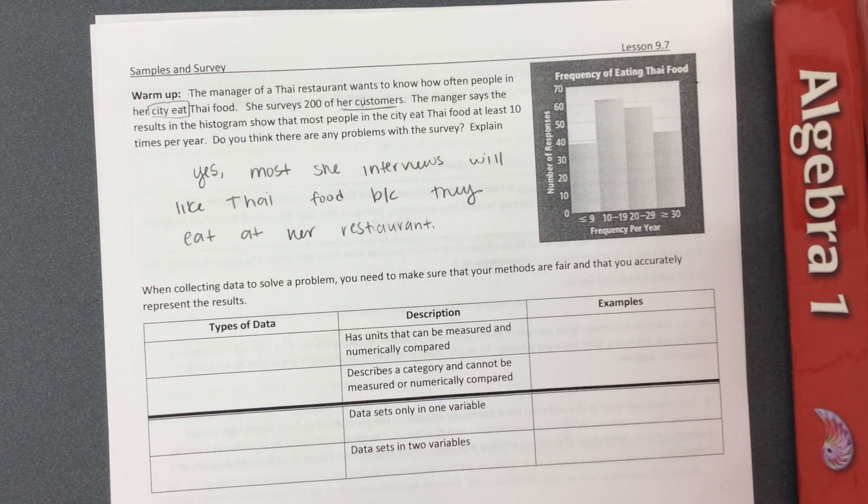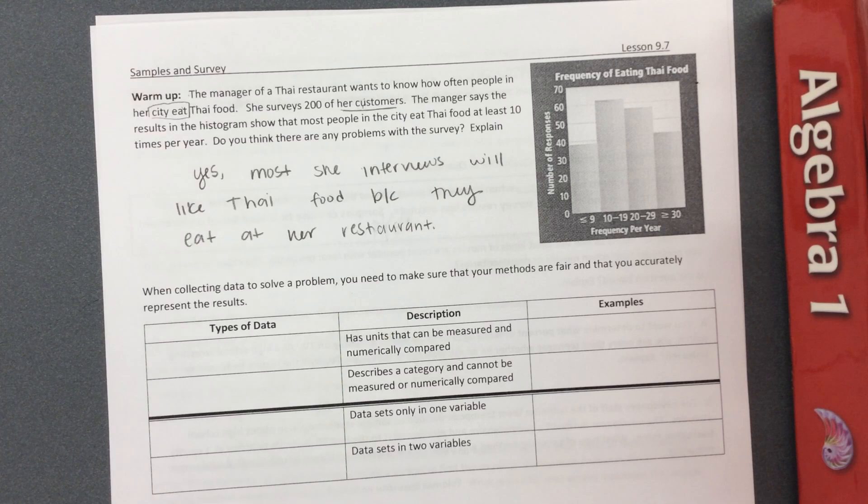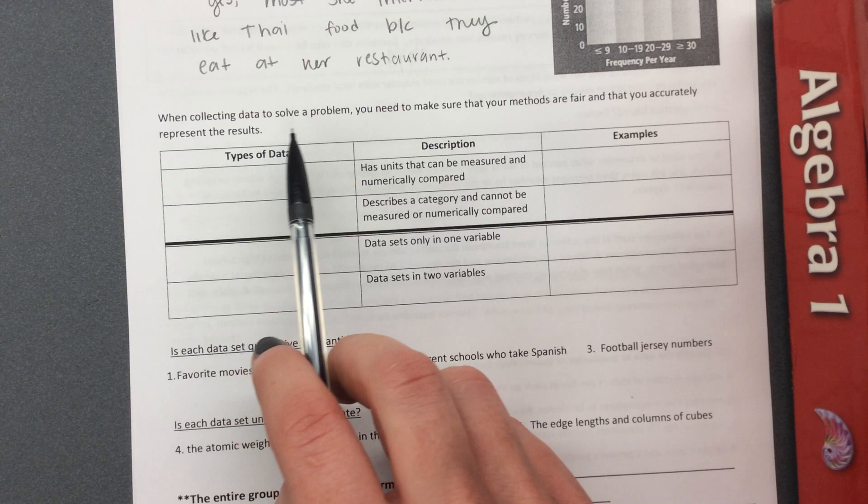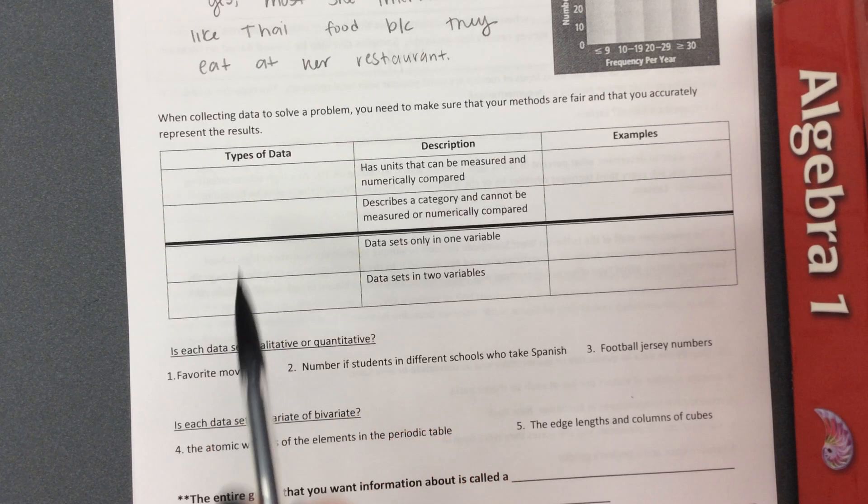So that's what we're going to talk about today — basically how to conduct surveys and samples so that they're not biased. In other words, they're a fair trial. When collecting data, we need to make sure your methods are fair and that you accurately represent the results.